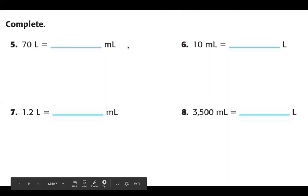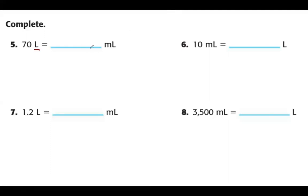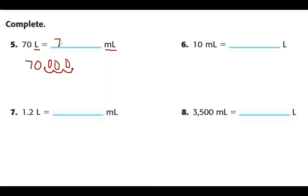We have four more problems. We'll multiply or divide by 1,000 each time — the only thing to figure out is whether we start with the small or large unit. First problem: starting with liters, the larger unit, so we multiply by 1,000. Moving the decimal three places to the right and adding three zeros gives us 70,000. So 70 liters is the same as 70,000 milliliters.